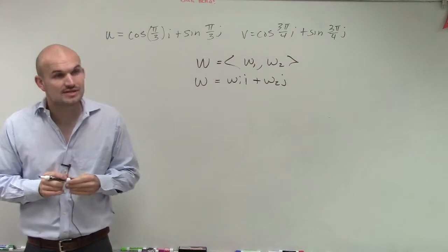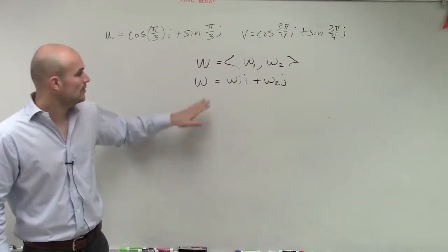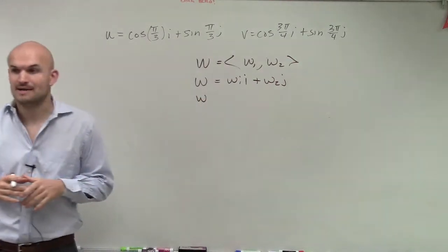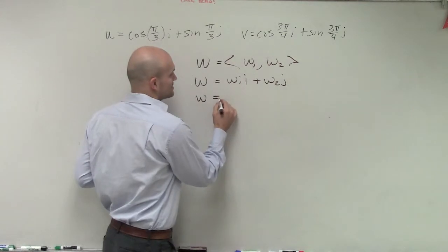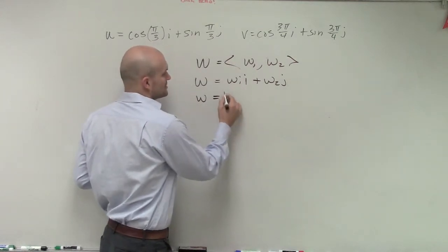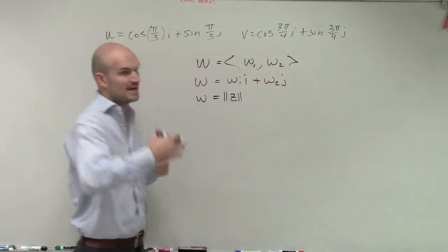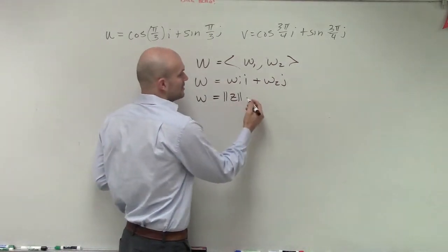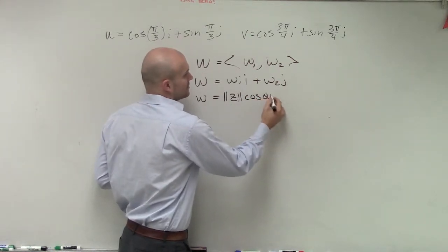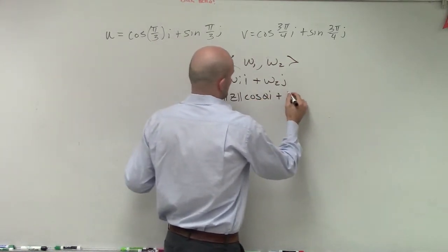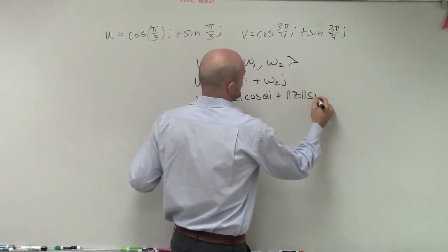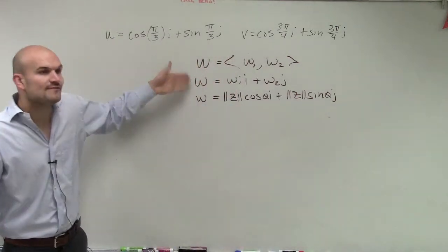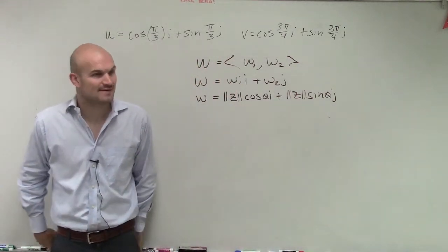There's another way we could do this. We could also take this and rewrite it as a unit vector multiplied by a magnitude with an angle. So we could say this is the same thing as: the magnitude of z — your magnification vector — times the cosine of theta i, plus the magnitude of your vector z times sine of theta j. These are three different ways to represent the exact same vector.